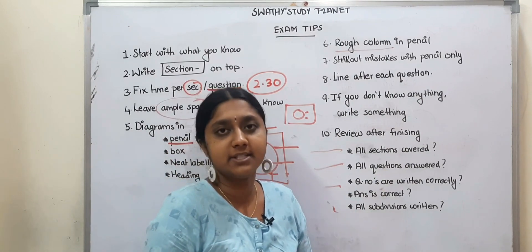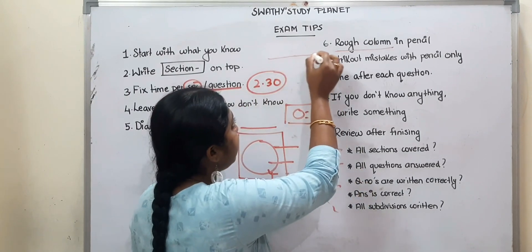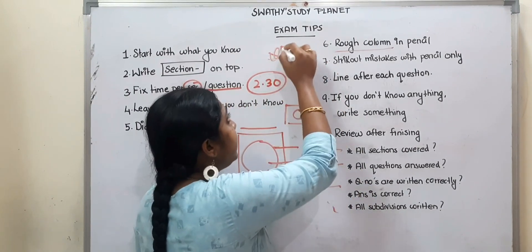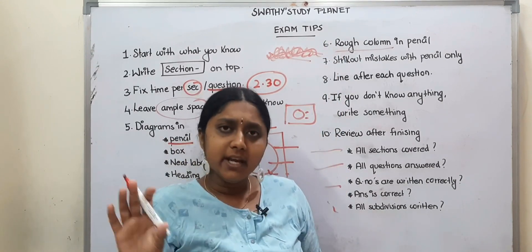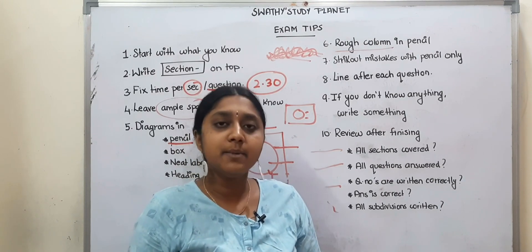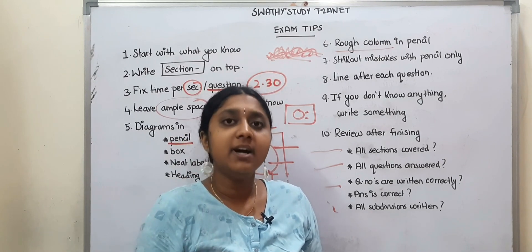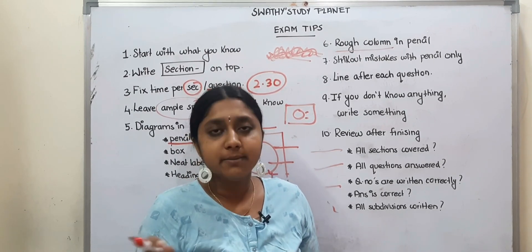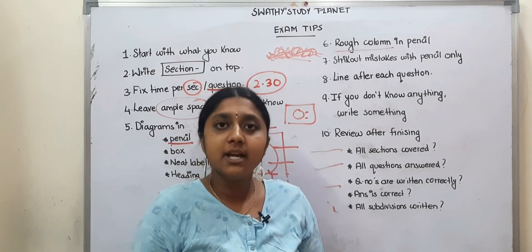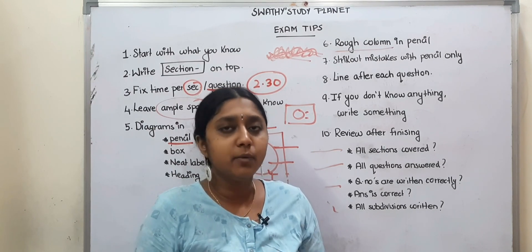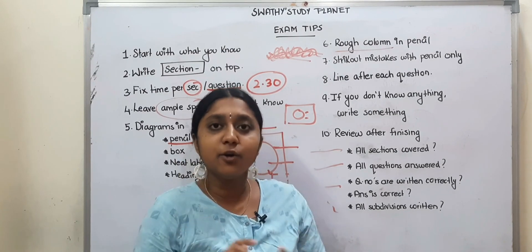Next tip is to strike out mistakes. This is a common mistake students make. If you do something wrong, use a single strike line through it — not a design or scribble. If you have a paragraph to cancel, make a single line strike with a pencil through it to show it is not needed. Avoid using Pelican whiteners in a board exam. Instead, just strike through the mistake with a single line.